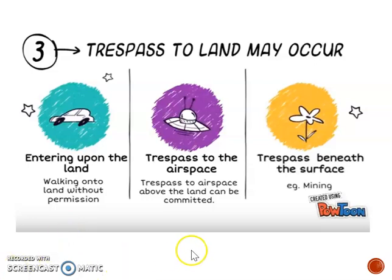The second way to commit trespass to land is through trespass to airspace above the land. For example, if a person has an advertising board projecting over into the claimant's property, that can be trespass to airspace. Note that the Civil Aviation Act 1982 means that you cannot take action in nuisance or trespass if an aircraft flies over your property at a reasonable height, so you won't be able to sue over EasyJet planes flying over your house.